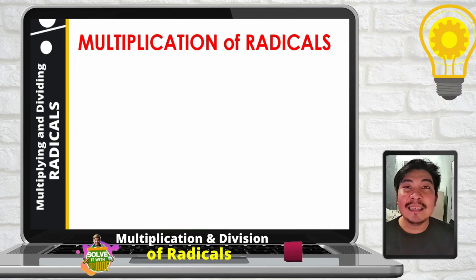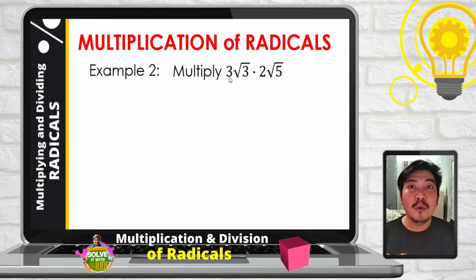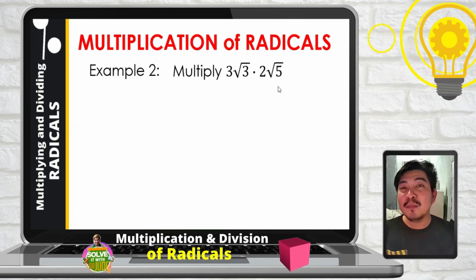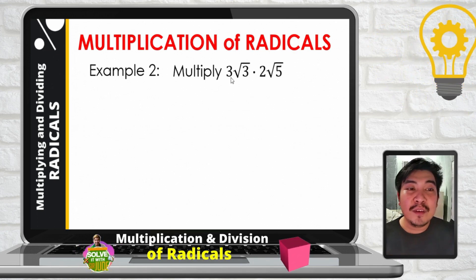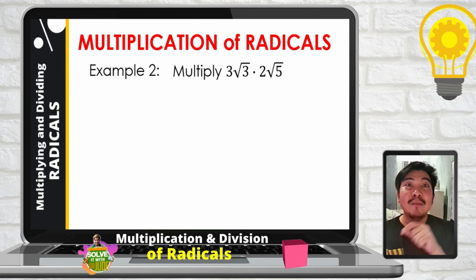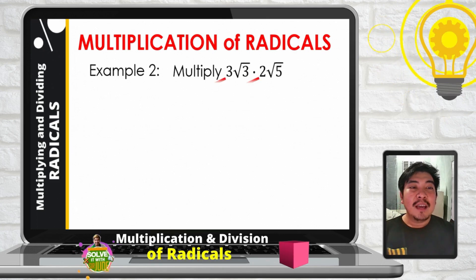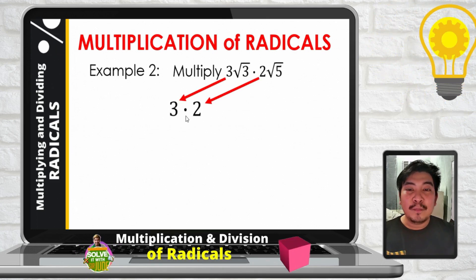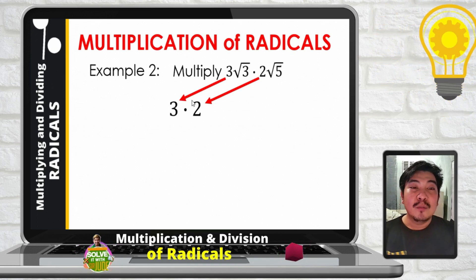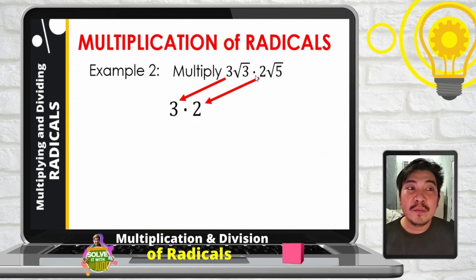Let us have example number 2. Multiply 3 square root of 3 times 2 square root of 5. We have coefficients outside the radical symbol and radicands inside. What we will do is multiply the coefficients separately and multiply the radicands separately. So that will be 3 times 2 — those are the coefficients of square root of 3 and square root of 5 respectively. Then since both indices are 2, we can combine them into one radical symbol.